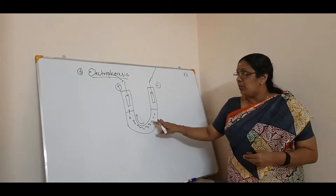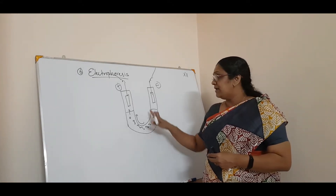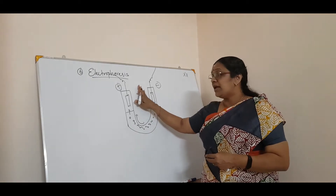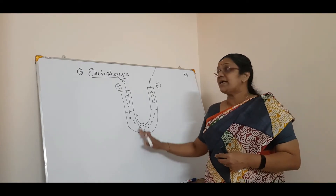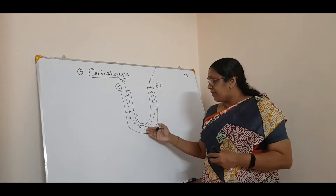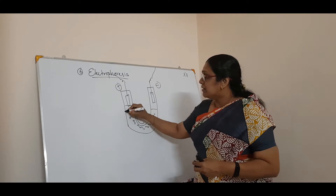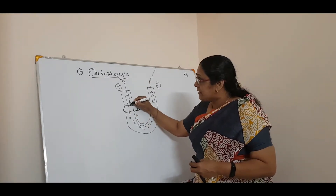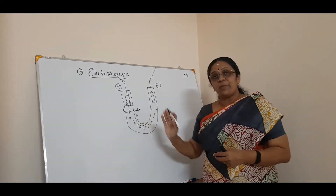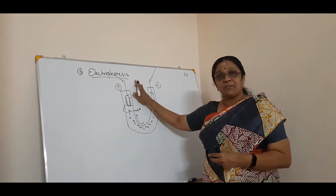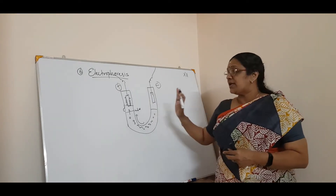Electrophoresis is defined as the movement of colloidal particles under the influence of an electric potential. The negative ions move to the positive electrode — the level increases and the particles get deposited at the electrode. The movement of colloidal particles under electric potential is called electrophoresis.